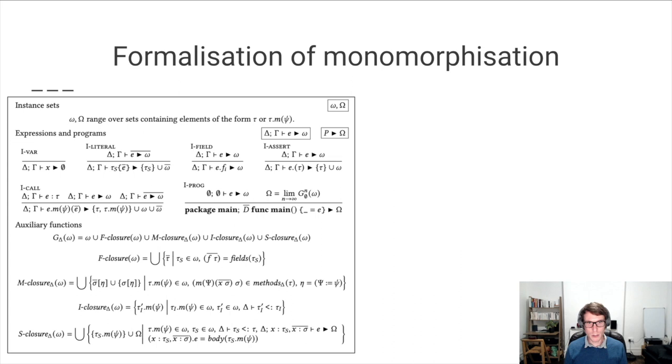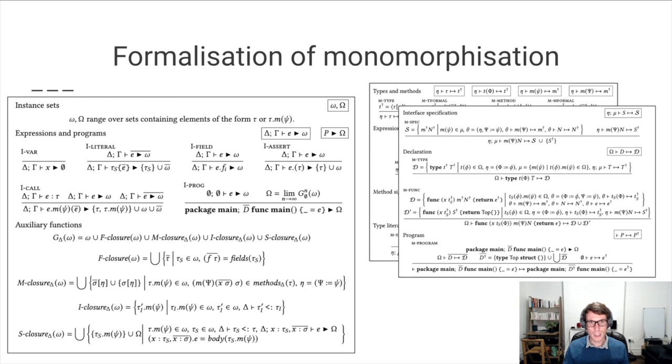To formalize our monomorphization strategy, we have defined two sets of rules. One set takes care of collecting these instances in a conservative way, while the other set of rules takes care of renaming the program and generating code accordingly.